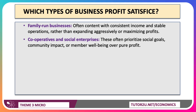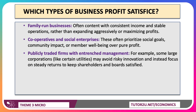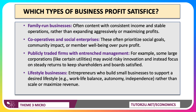Cooperatives and social enterprises are not purely for profit — or another way of putting it is 'profit with a purpose'. They often prioritise social goals, community impact, or member wellbeing over pure profit. Sometimes you have listed companies with entrenched management that want steady returns to keep owners satisfied rather than maximal returns. Many businesses in the UK also remain small because they're operated as lifestyle businesses — entrepreneurs who build a business to support a desired lifestyle rather than to scale and maximise returns.